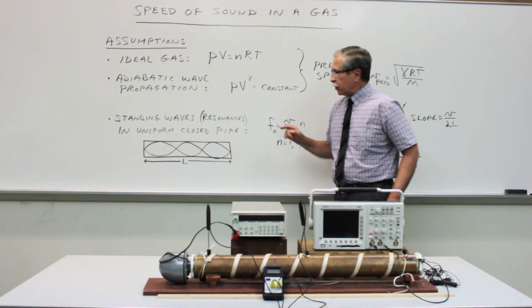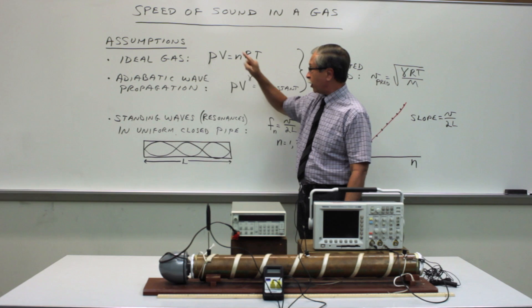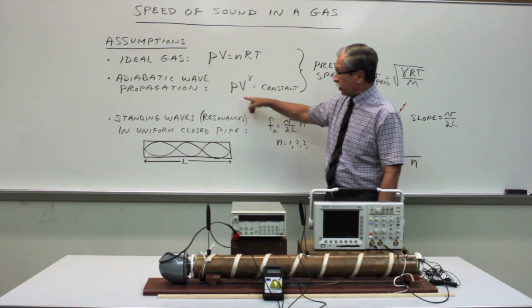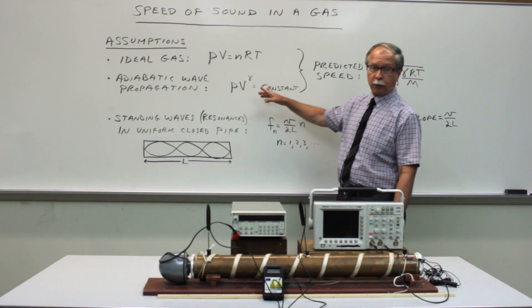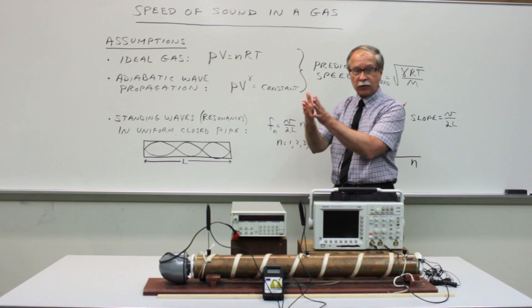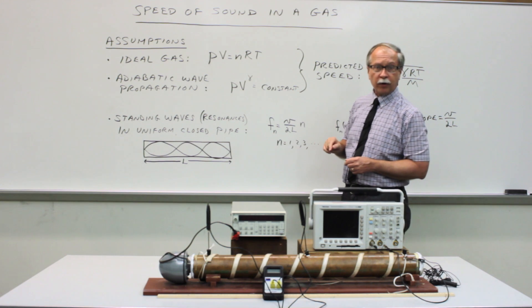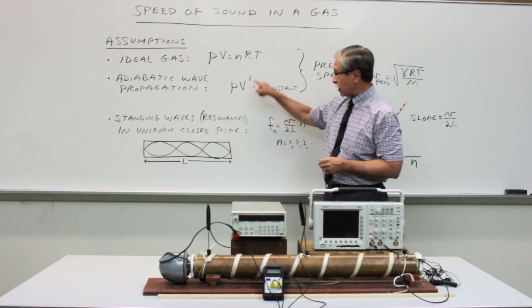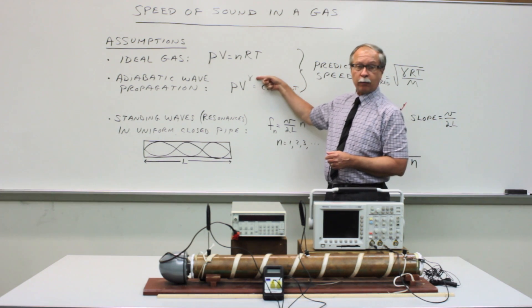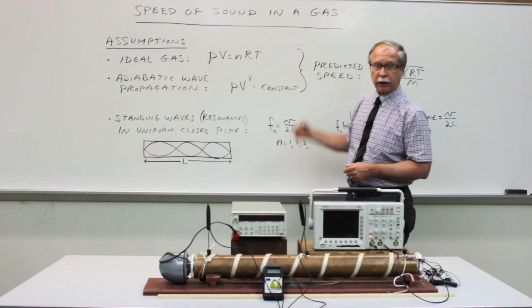Just a recap of the theory. We assume that we can treat the gas as an ideal gas, that is to say the pressure times the volume is the number of moles times the universal gas constant times the temperature. We further assume that the sound waves propagate through the gas so quickly that there is no time for heat to be transferred from the locally compressed regions to the adjacent locally expanded regions. And the equation for an adiabatic process is PV to the gamma power is a constant. This gamma factor contains all the information about the structure of the molecule, so that's very relevant to exploring how the structure affects the speed of sound.